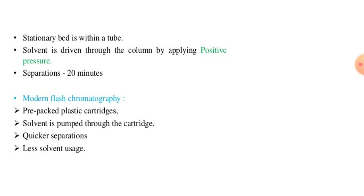The stationary phase is embedded within a tube and solvent is drawn through the column by applying positive pressure. This process requires about 20 minutes for separation. In modern flash chromatography, a pre-packed plastic cartridge is used and the solvent is pumped through the cartridge, giving quicker separation with less solvent usage.